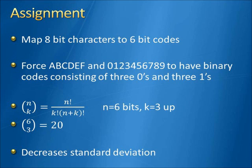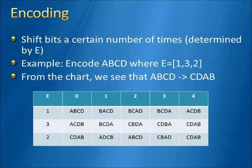First, we're going to talk about the assignment stage. We're going to map 8-bit characters to 6-bit codes. The most important characters to consider are capital A–F and 0–9, because these are used for both hexadecimal and serial numbers. Since these recur most frequently, we want them to have the lowest standard deviation of error. In order to do that, we need each of them to be assigned to a bit value with three zeros and three ones.